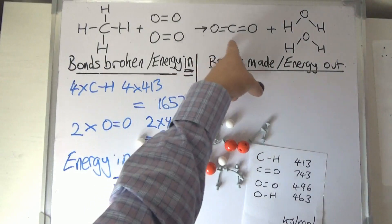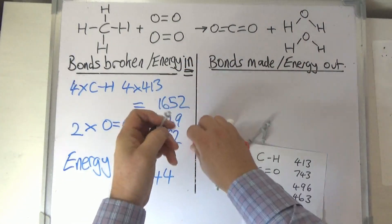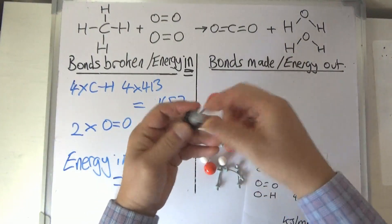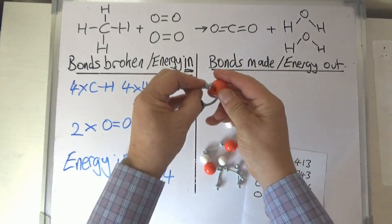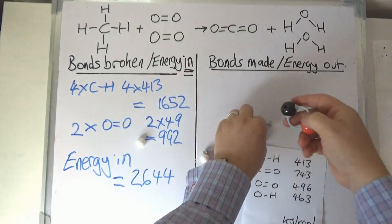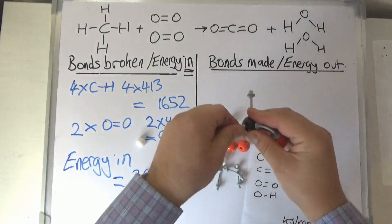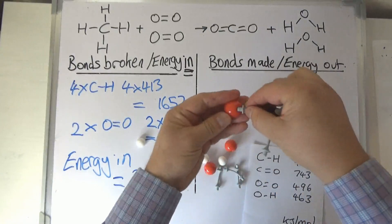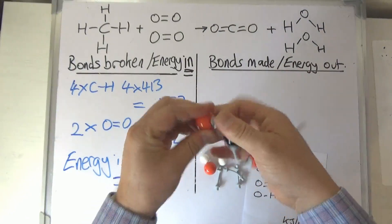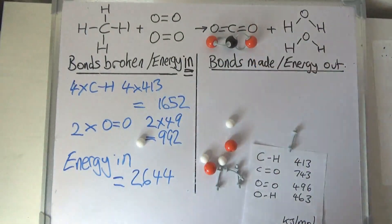Let's first of all form this molecule of CO2. Here's the carbon atom, and it's going to join with an oxygen on this side with a double bond — so there's the double bond forming between the carbon and that oxygen. Then the same happens at the other side: we've got a carbon joined by a double bond to another oxygen atom. All the time that these new bonds are forming, energy is being released.